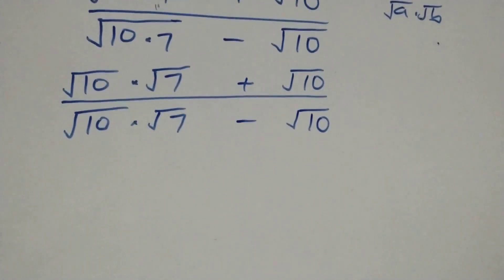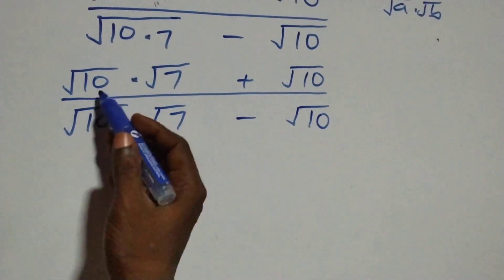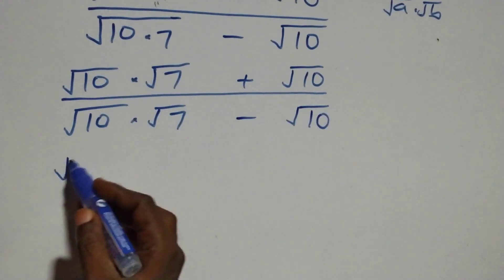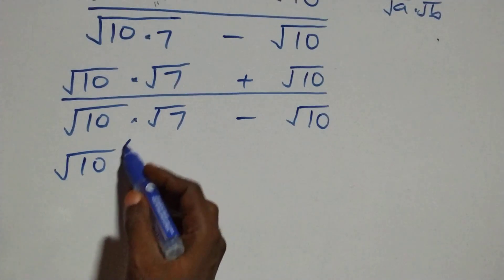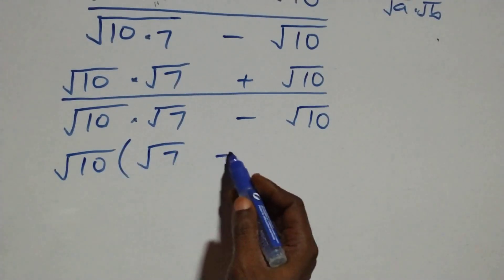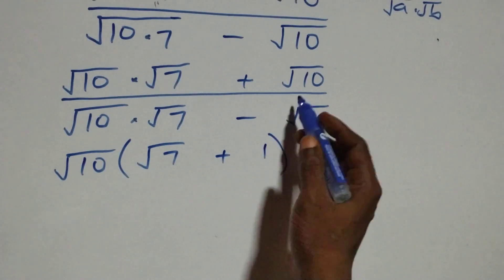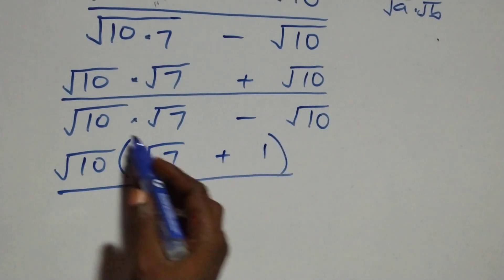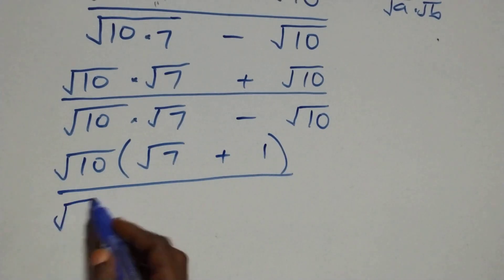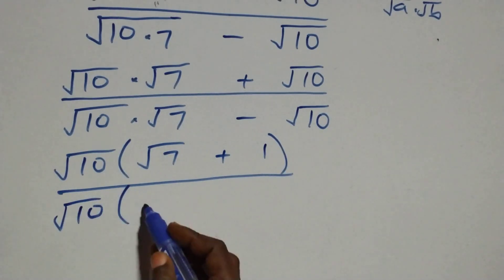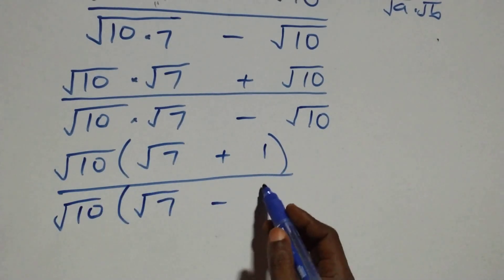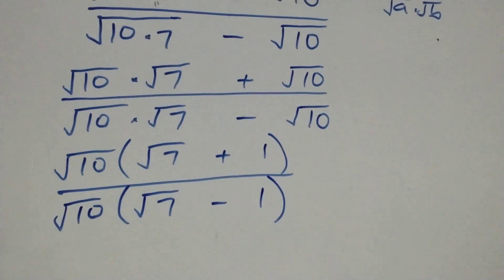Next, root ten is a common factor in the numerator, so we factor it out: root ten into bracket root seven plus one. Divided by root ten, which is also a common factor in the denominator, giving root ten into bracket root seven minus one.